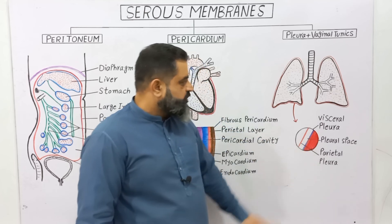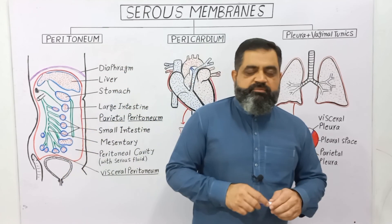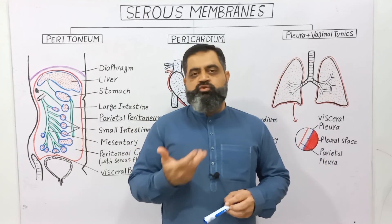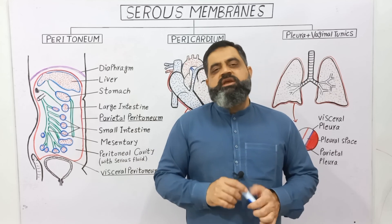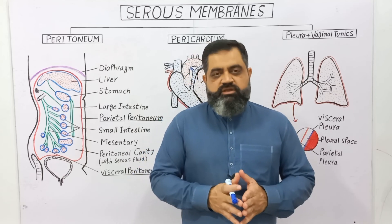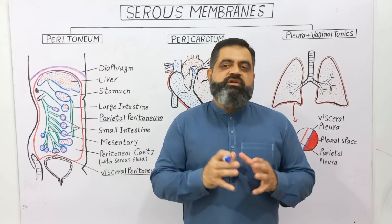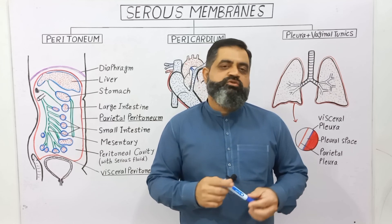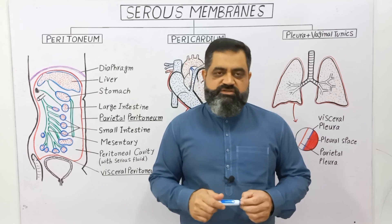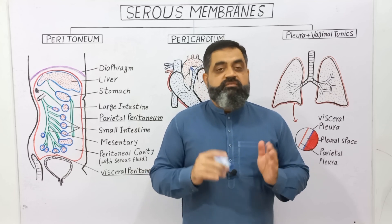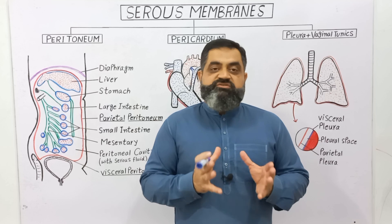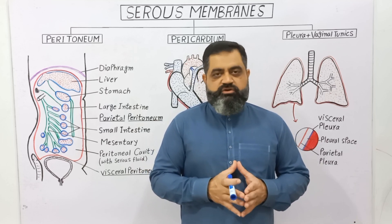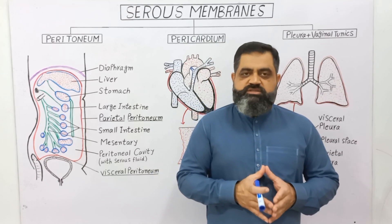In this way, all these membranes — pleura, pericardium, and peritoneum — are overall known as serous membranes. They surround our vital organs, provide space for them to perform their function of contraction, such as the lungs, heart, and digestive system, and help avoid excessive friction during contraction and relaxation, thereby protecting those vital organs. I hope that makes sense, and I'll see you in the next lecture.